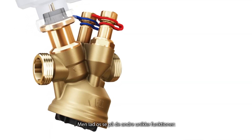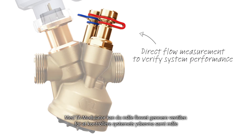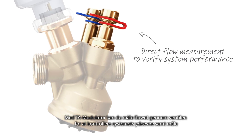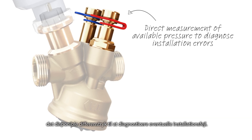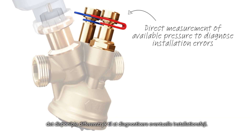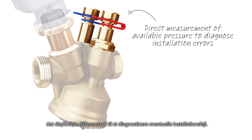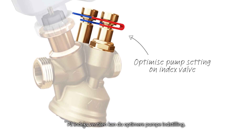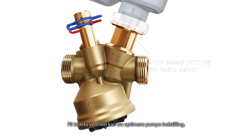But let's look at the other unique features. With TA modulator you can measure the true flow through the valve to verify the system performance, as well as measure the available differential pressure to diagnose possible installation errors. On the index valve you can optimize pump setting.